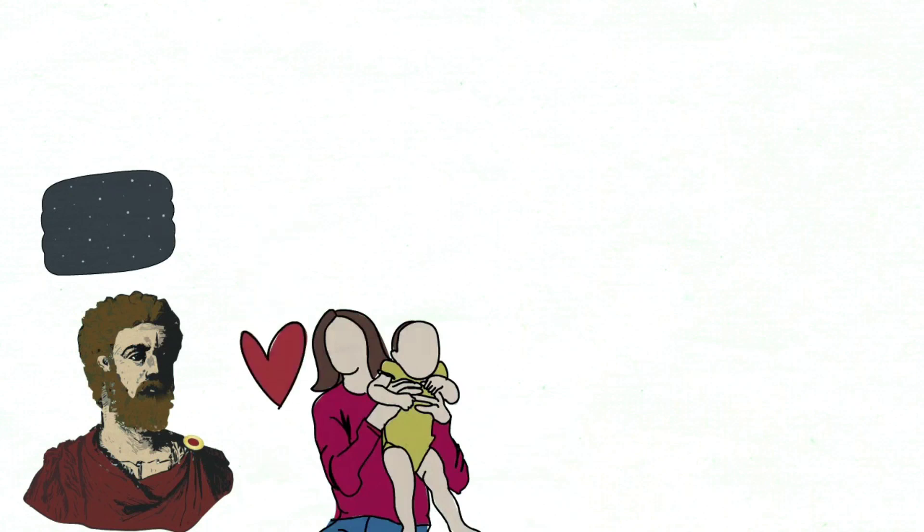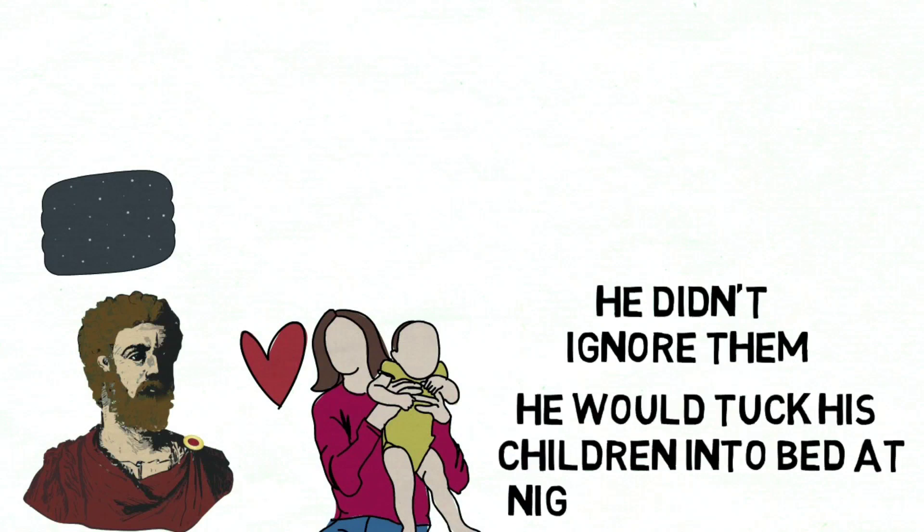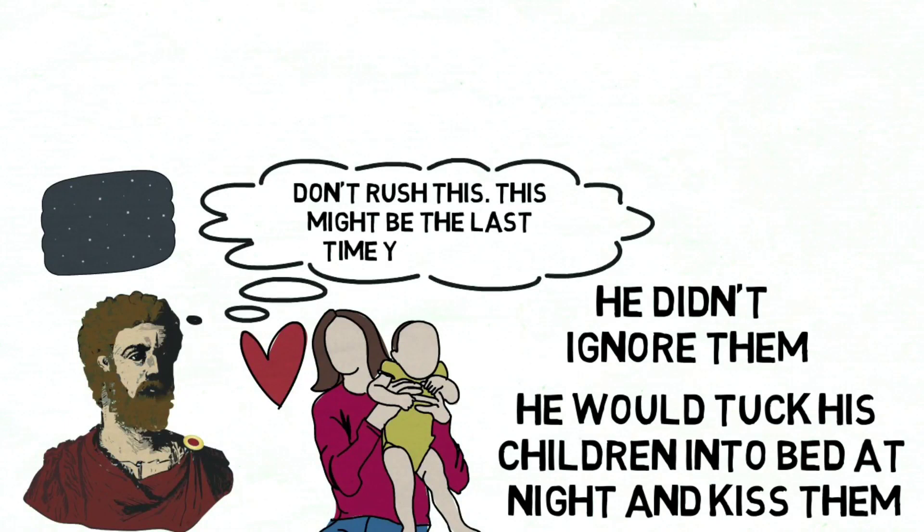For Marcus Aurelius, as the day came to a close, it was time to be around family. Marcus clearly loved his children and his wife dearly. Even though he was important, famous and extremely busy, he did not ignore them. He would tuck his children into bed at night and kiss them. He would say quietly to himself, don't rush this. This might be the last time you do this. It is not guaranteed that either of you will make it through the night. He loved them. He cherished this thing in front of him, which really was the most important thing in his life. And then he said goodnight. He would repeatedly do this for as long as he was fortunate enough to live.